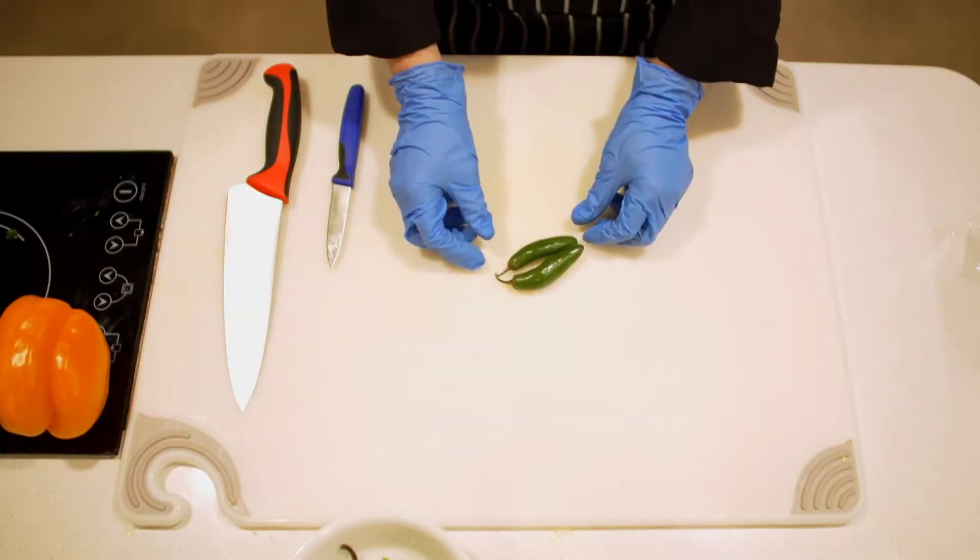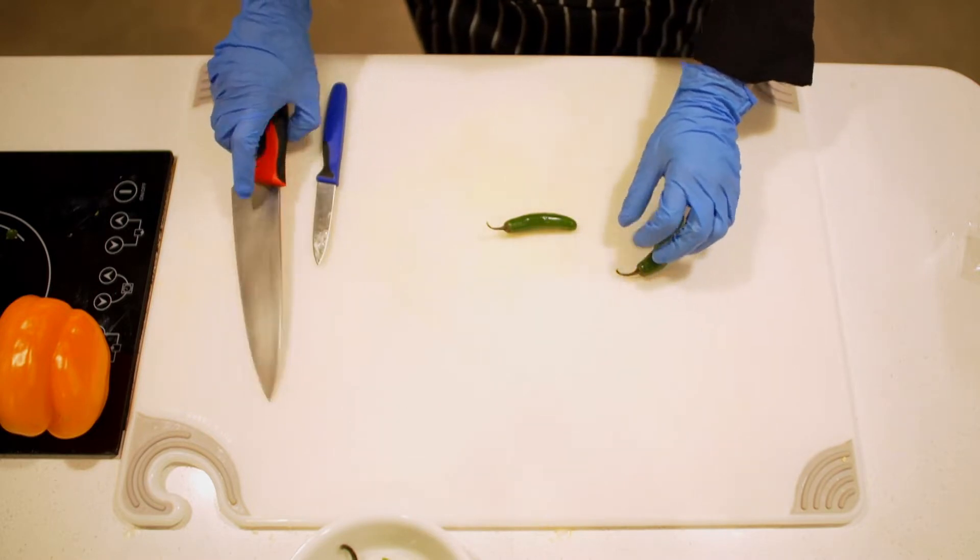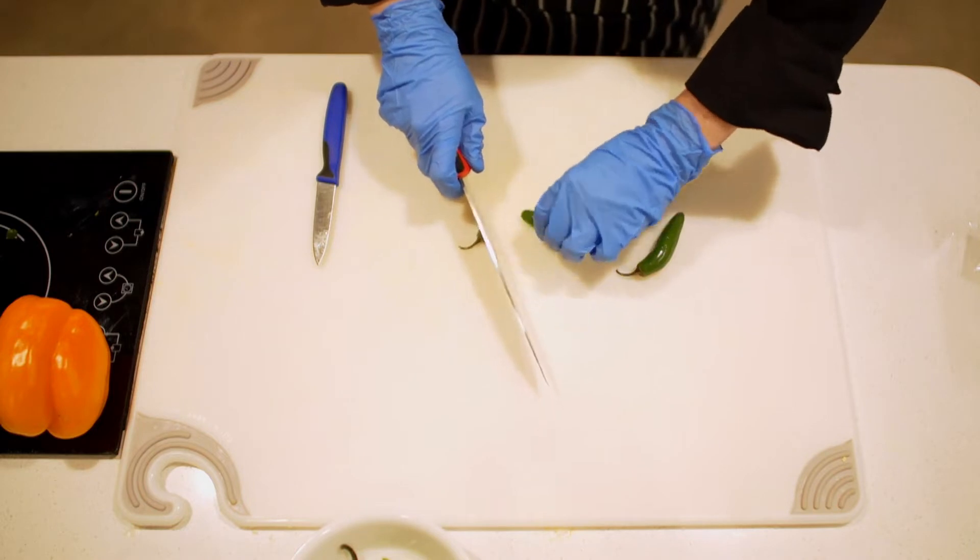These are Serrano peppers and they are definitely going to be a little bit hotter than just a bell pepper, which doesn't have any heat at all. You're just going to want to cut off the stem end and the tiny bit of the tip just to even it up a little bit.